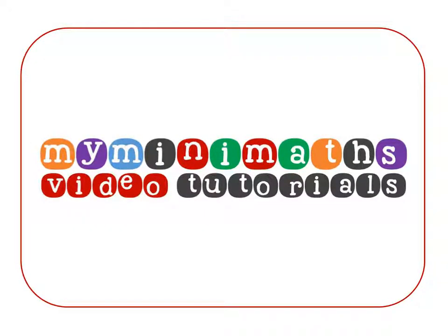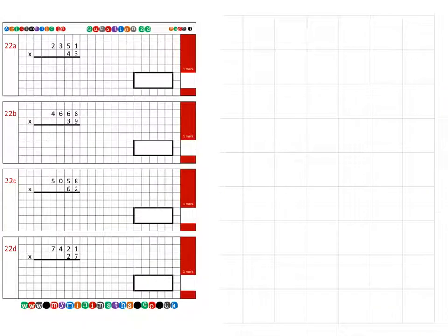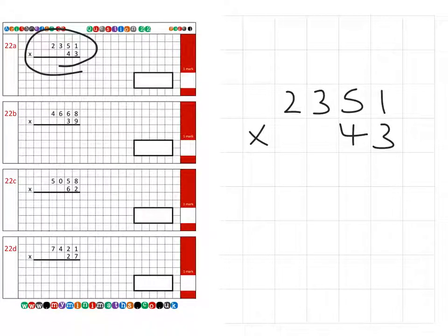Hello and welcome to myminimaths.co.uk video tutorial. Today we're going to be looking at arithmetic question 22, which is long multiplication. If we look at the first question, 22a, we use the squares over here to write our numbers into the correct positions. So we have 2351 multiplied by 43.